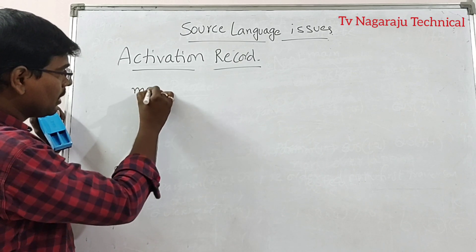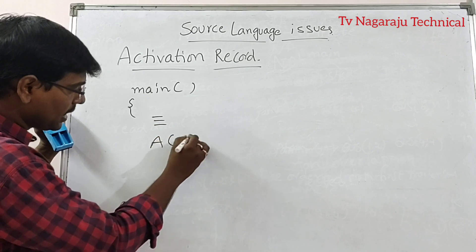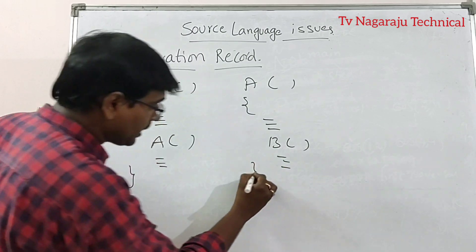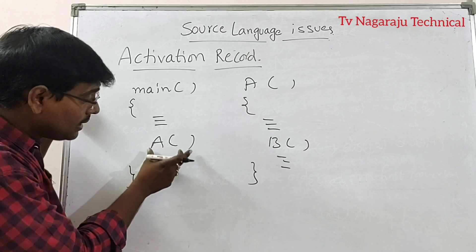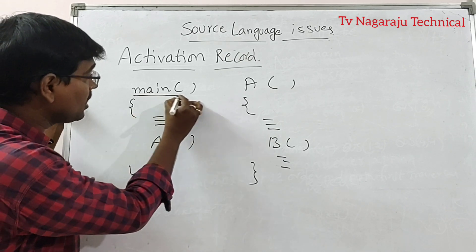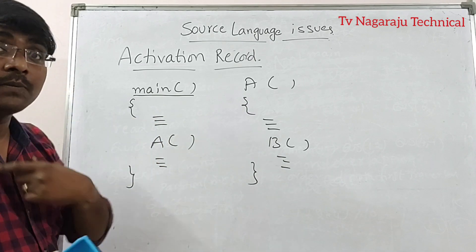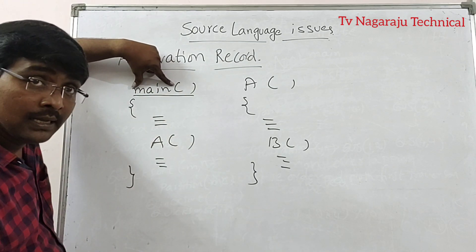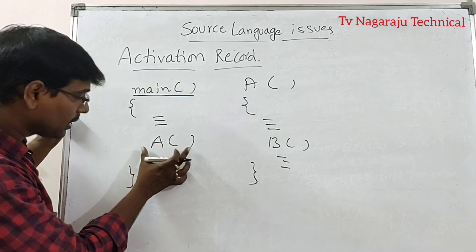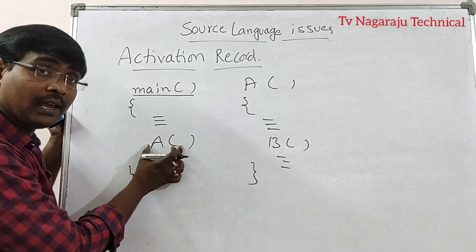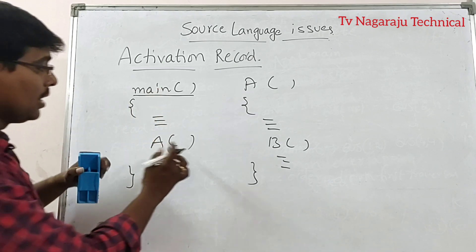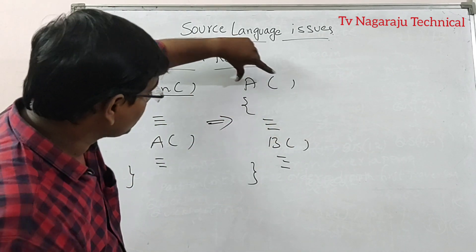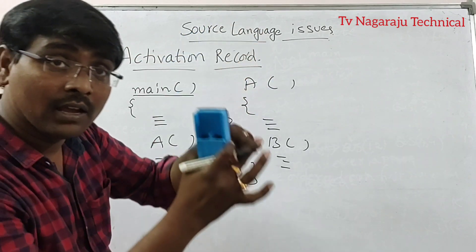For example, consider main with some set of statements and a procedure A. Before calling the procedure A, first the activation record for main is created, meaning execution starts from main. The activation record for main is created and pushed into the stack. After that, the activation record for A is created and pushed into the stack. Before calling B, the activation records for both main and A are created and available in the stack.